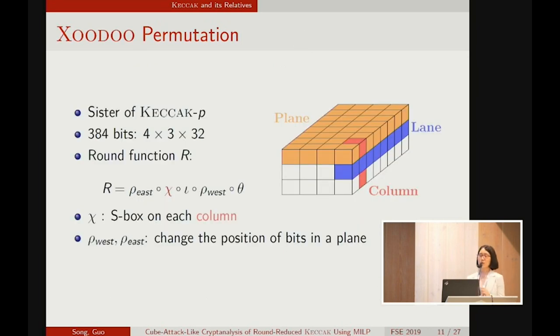XOODOO, we can regard it as a sister of KECCAK-p. It has an internal state of 384 bits. It can be arranged as a 4x3 array of words. The round function is different from that of KECCAK-p.